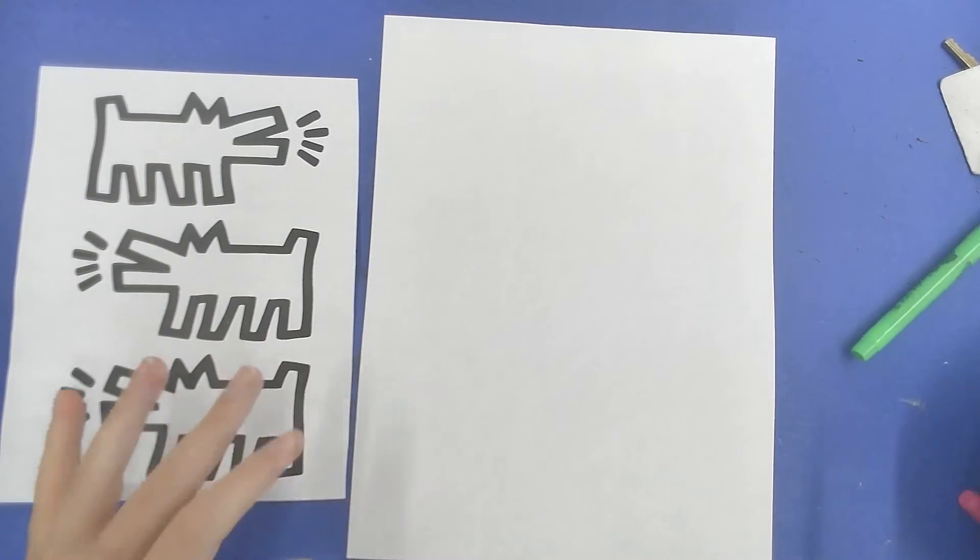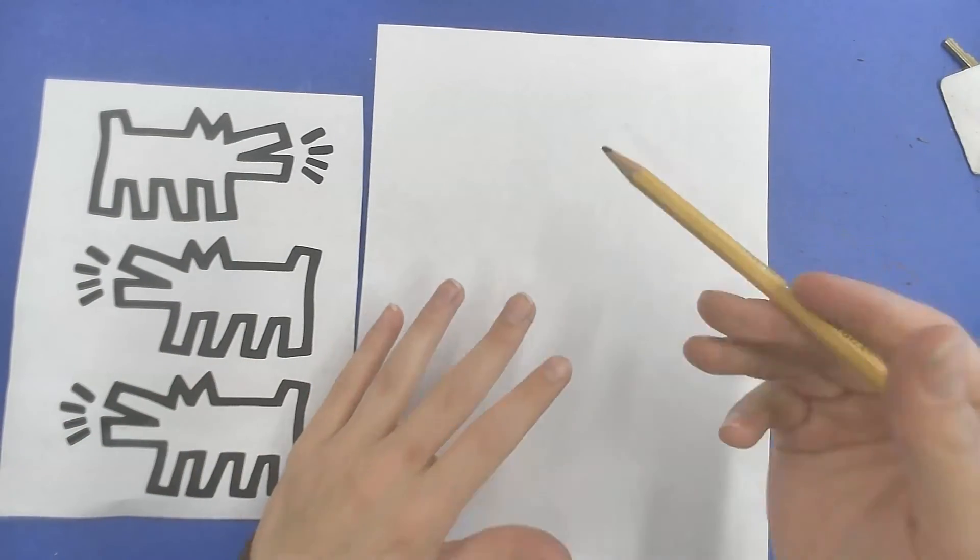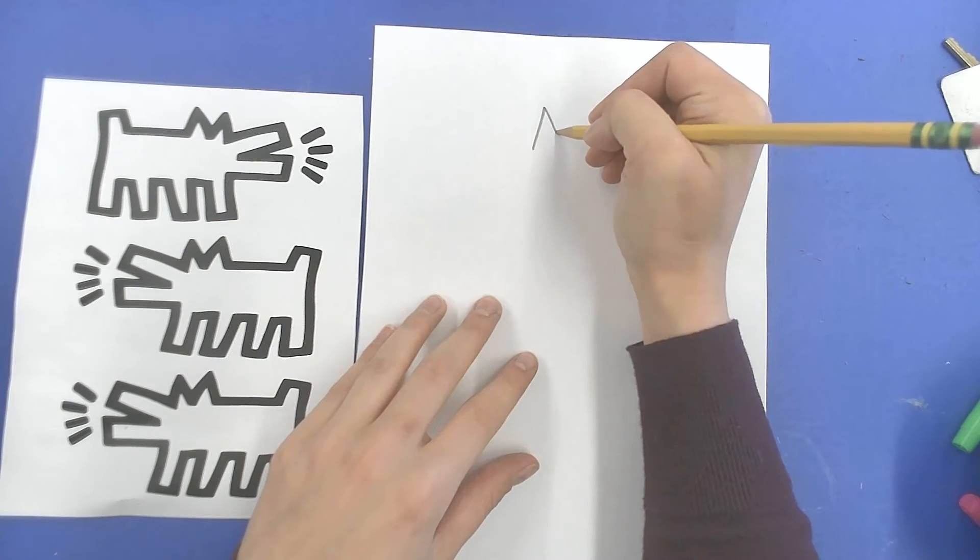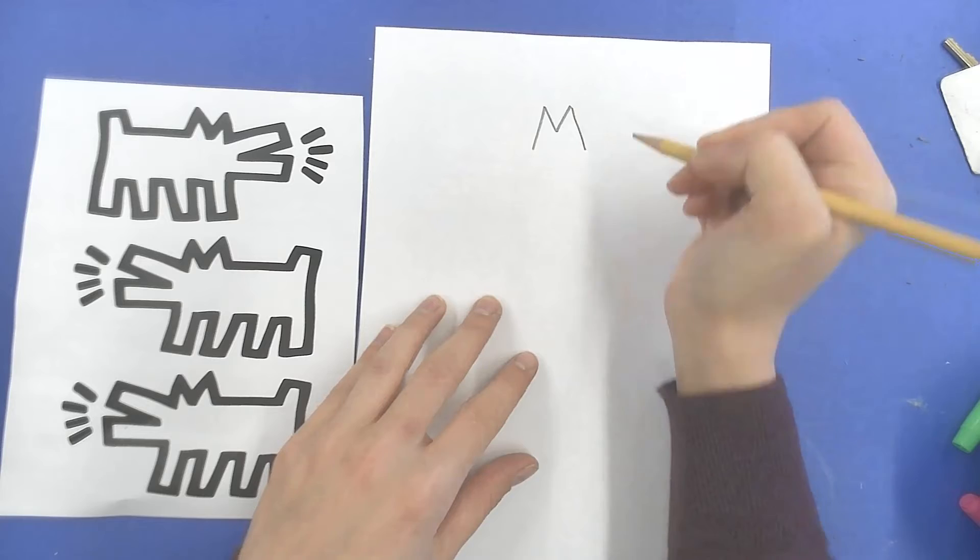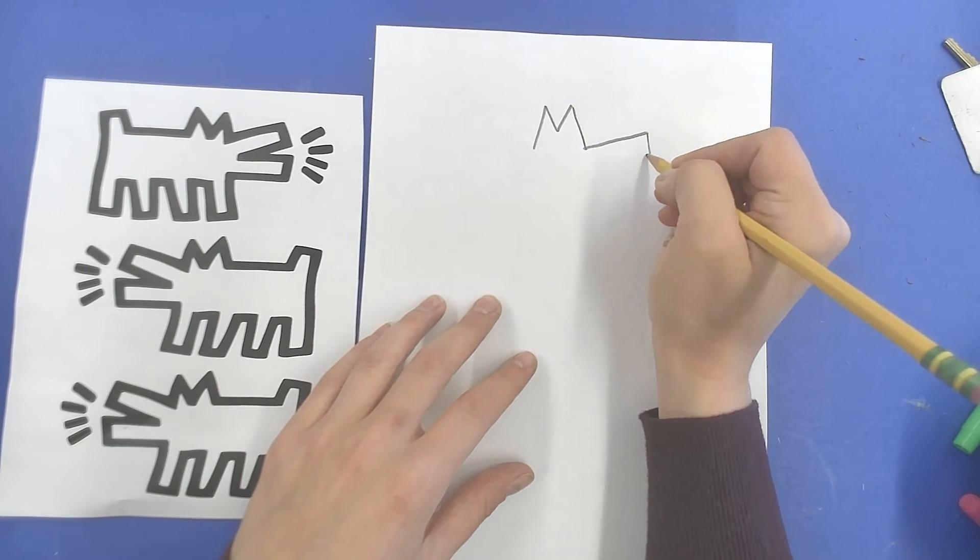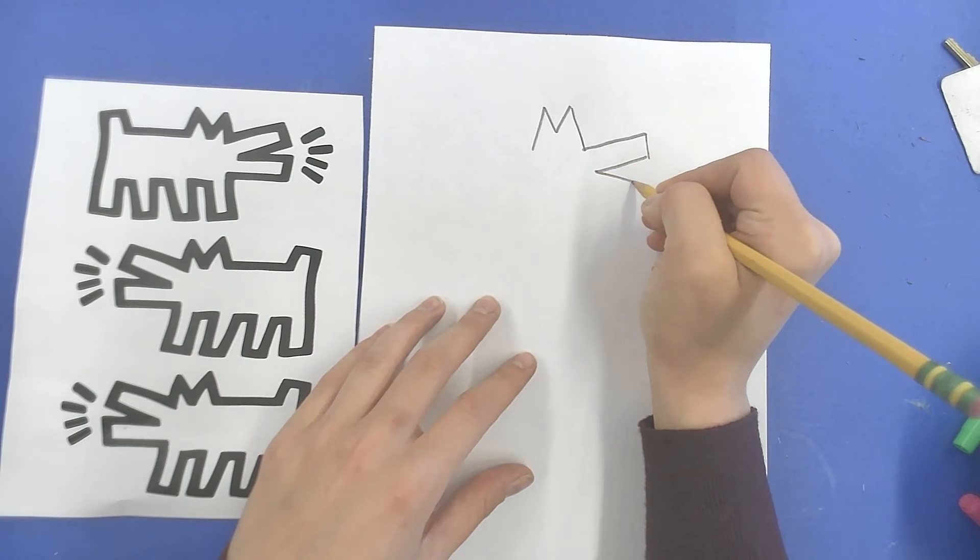It's all just letters and shapes. So I always like to start with the ears and the ears are the letter M. Then the mouth is one long rectangle. And another one.